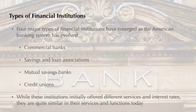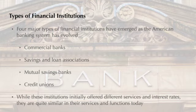Four major types of financial institutions have emerged as the U.S. banking system has evolved. For many years these institutions offered different services at different interest rates; today, however, they are much more similar in their services and functions. The most common types of financial institutions have included commercial banks, savings and loan associations, mutual savings banks, and credit unions.